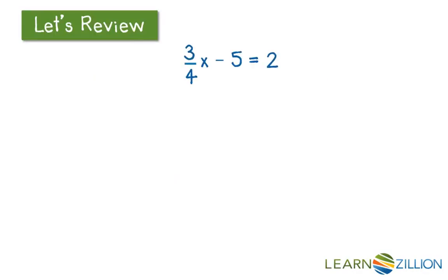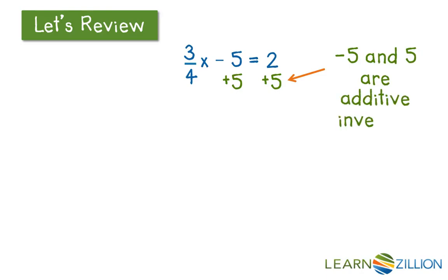First, let's review. You've already learned how to solve an equation where x only appears on one side of the equation. For this one, we need to get rid of everything on the same side as x so we can get x all by itself. First, we need to undo that minus 5. To do that, we need to add 5 to both sides because negative 5 and 5 are additive inverses of each other, so when we add 5 to negative 5, it equals 0. On the left side, we will just be left with 3/4x, and on the right side, we will get 7.